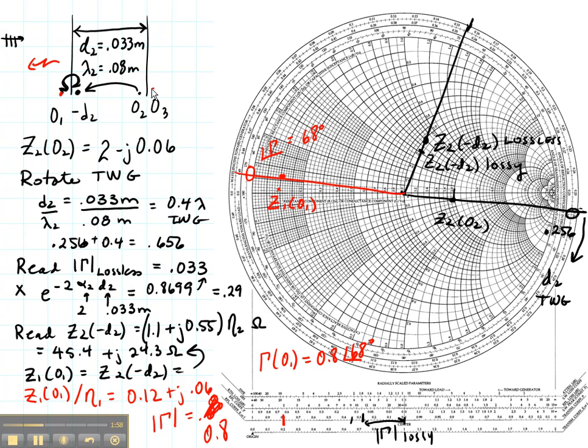We started right here at 0.03. We calculated the characteristic impedance, which is eta3. We then used that to jump the boundary over to O2. We plotted that on a Smith chart, normalized it, rotated it a distance minus D2 until we got over here to this point, and then we calculated the attenuation using the reflection coefficient.